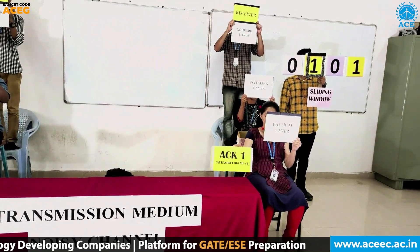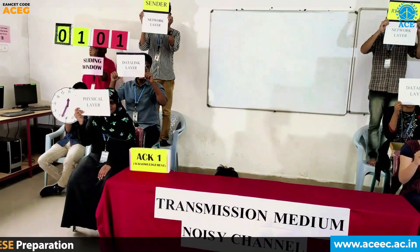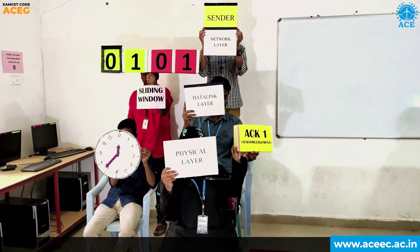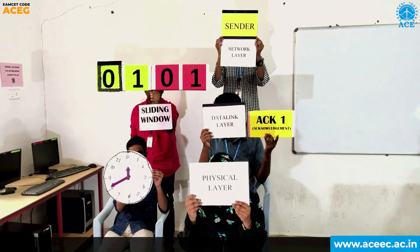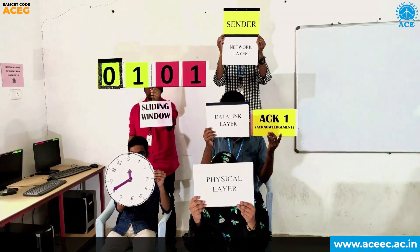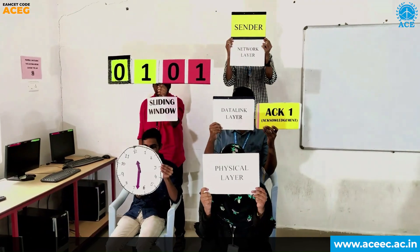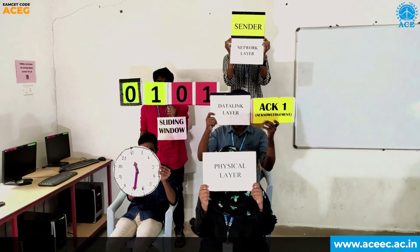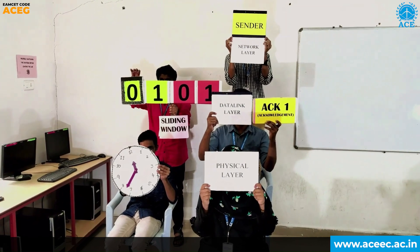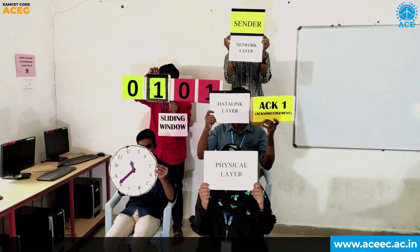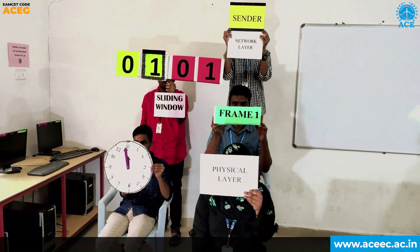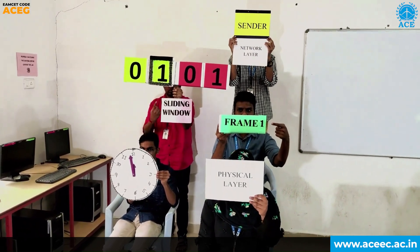The physical layer transmits acknowledgement 1 to the sender through the transmission medium. The sender physical layer receives acknowledgement 1 and hands it over to the data link layer. The sending data link layer understands that the previously sent frame was successfully received. ACK1 represents the next frame expected by the receiver. As the acknowledgement is received before the timer expires, the sender sliding window slides one bit, and the data link layer creates a new frame with sequence number 1 and hands it over to the physical layer.